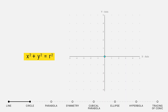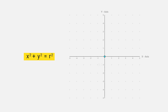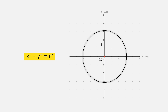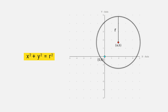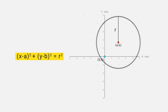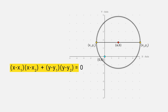x squared plus y squared equal to r squared is the equation of a circle with center at (0, 0) and radius equal to r. If we move the center to point (a, b), then the equation of the circle is (x minus a) whole square plus (y minus b) whole square equal to r squared. If the endpoints of a diameter are given, then the equation of the circle is (x minus x1)(x minus x2) plus (y minus y1)(y minus y2) equal to 0.